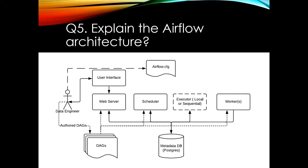Another component is the scheduler. Every second, the scheduler navigates through the DAGs and helps you schedule the tasks that need to be executed. DAGs have internal components known as executors. As the name suggests, the executor helps execute tasks — it handles scheduling and orchestration of all tasks, assigning them to workers.